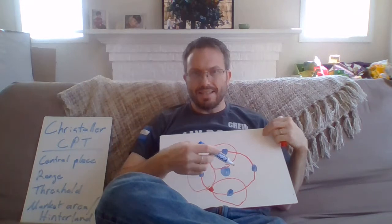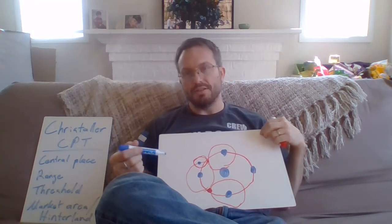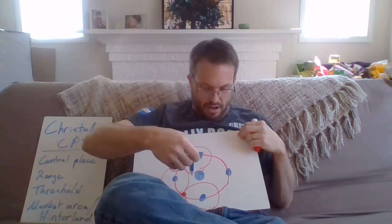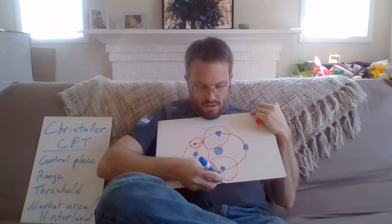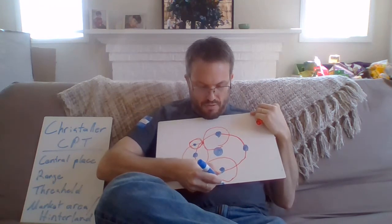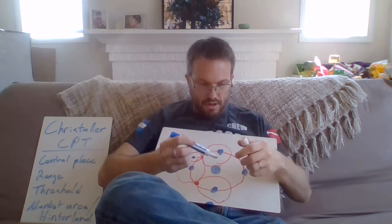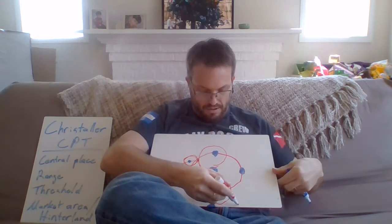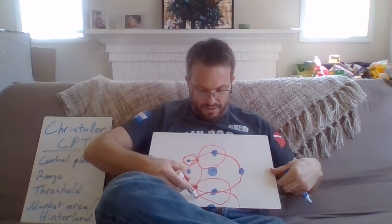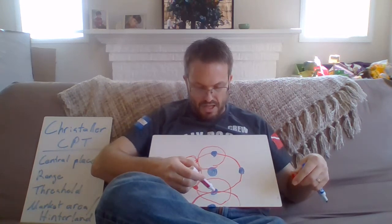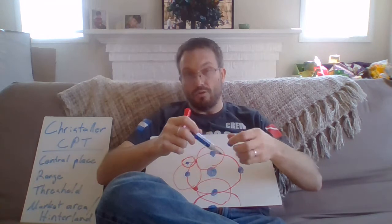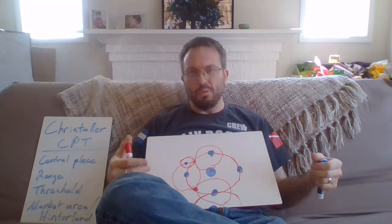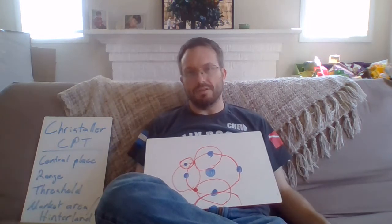What the book doesn't show is that the central place is essentially infinite across the plane of geography. So here's Seattle, and way down here would be another big central place — Portland. Portland would then have its own market area that would basically cross over here. So those in, say, Centralia or maybe Tacoma might be willing to drive that far for particular services.